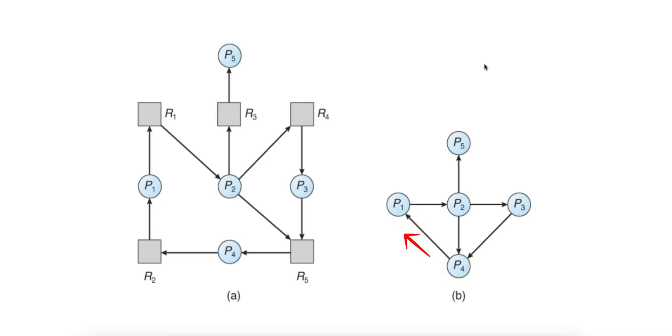Once a deadlock is detected, the system must implement recovery strategies to resolve the deadlock. There are two common recovery methods. Number one is process termination. This involves terminating one or more processes involved in the deadlock. The choice of which process to terminate can depend on various factors, such as process priority or resource usage. After terminating a process, its resources are released, allowing other processes to continue.